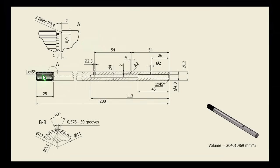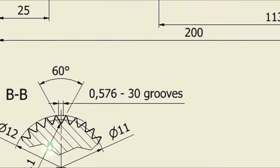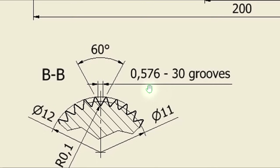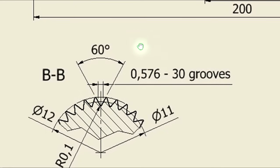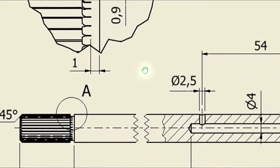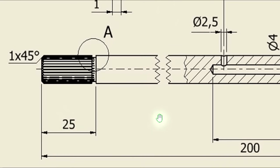Now the groove. You see the distance between the two points on the circle of 11 is 0.576. And there are 30 groove instances. The angle is 60° and there is a radius here. Let's create this groove with a length of 1 millimeter, before this 25. OK.